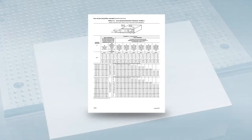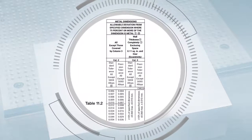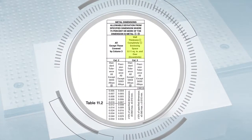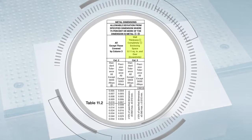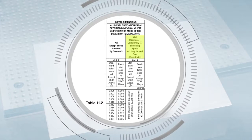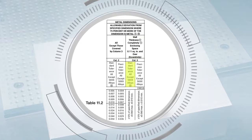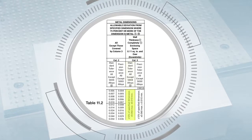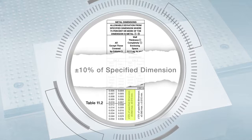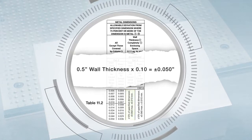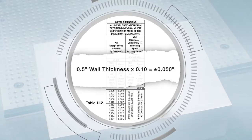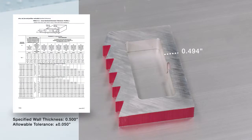We'll use this part as an example to show how to measure and determine the applicable tolerances for metal and space dimensions of a hollow extruded profile using table 11.2. The overall profile size is less than 10 inches circle size, so we'll look at the top half of the table. To determine the metal dimension wall thickness tolerance, you will need to use column 3 since the void for this example is larger than 0.11 square inches. You will also use the standard tolerances side of the column unless precision tolerance is requested by the purchaser. The tolerance is plus or minus 10% of the specified wall dimension. For a half inch wall thickness specified dimension, the tolerance would be plus or minus 0.050 inches. Measuring the wall, we find the actual thickness is 0.494 inches, which is within the allowable tolerance.